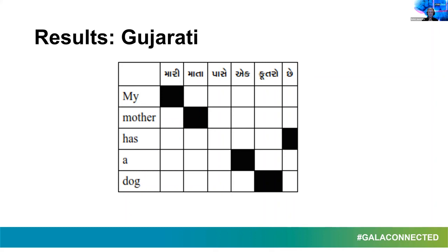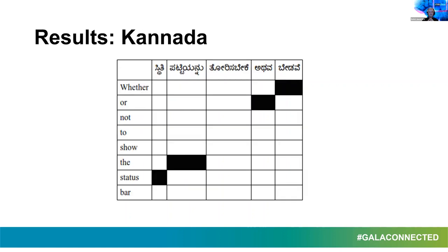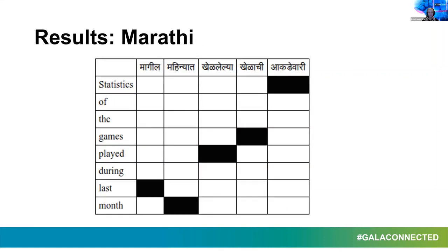What we did at XTM lately: we trained vector spaces for some of the official languages of India. What I'm presenting are the results — for example, for the language of Gujarati, with its very interesting Brahmic script. We can also see other interesting scripts: the language Kannada, another old Brahmic script. And Marathi, written with the Devanagari script — one more language we can now actually analyze.